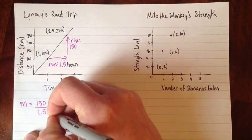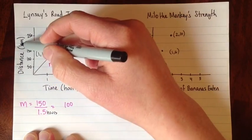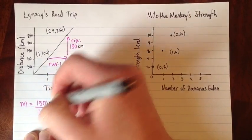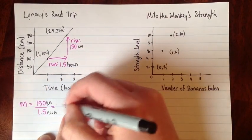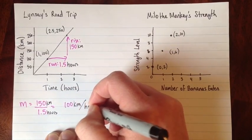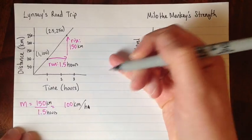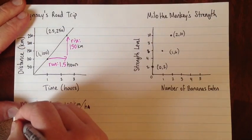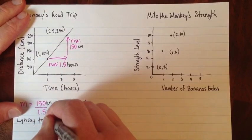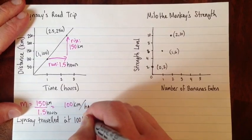And I'll add that down here too. And then my rise, the 150, that was kilometers. So this means that my slope is 100 kilometers divided by hours. So it's 100 kilometers per hour. So this tells us that Lindsay traveled at 100 kilometers per hour.